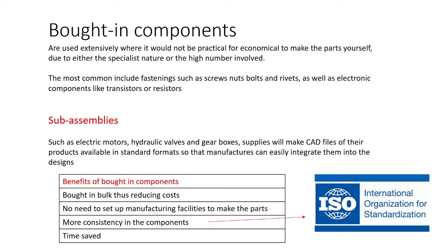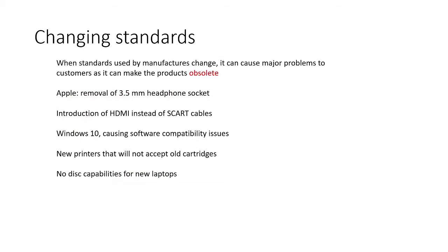Buying in bulk is a lot cheaper, more consistent, and saves time — it's one less thing to worry about as a company. However, when standards change, things can become obsolete, meaning parts are no longer made so you can't replace or fix them. For example, Apple removing the headphone socket, HDMI replacing SCART cables, Windows 10 causing compatibility issues, new printers not accepting old cartridges, and the disappearance of disc drives and floppy disks.